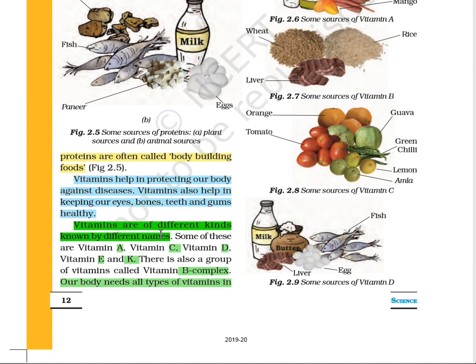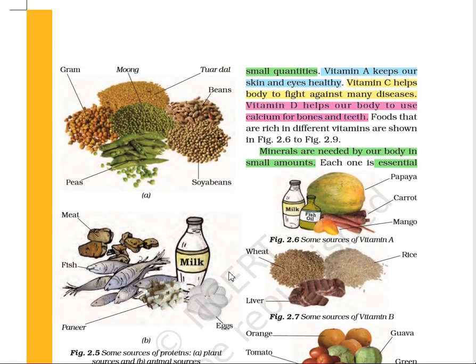Vitamins are of different kinds, so they are named by different names like vitamin A, vitamin C, vitamin D, vitamin E, and K. We also have vitamin B complex — the term 'complex' means vitamin B is not only one; it is a group of vitamins like B1, B4, B6, B9, B12, etc. Our body needs all these vitamins, but in very small quantities. They are not nutritious — they are required only for proper functioning of our body. Just like a school has many teachers but only one principal who guides, we need lots of carbohydrates, fat, and protein, but vitamins and minerals are required in small quantities.